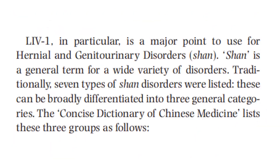Liver 1 in particular is a major point for use in hernia and genitourinary disorders. Shan is a general term for a wide variety of disorders. Traditionally, seven types of shan disorders were listed, which can be broadly differentiated into three general categories.